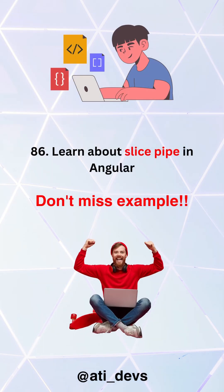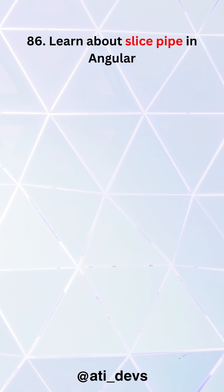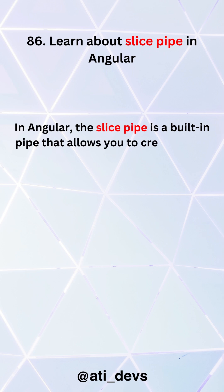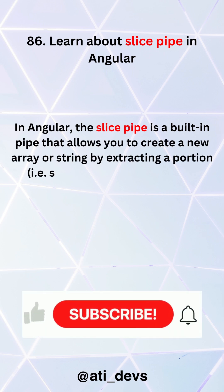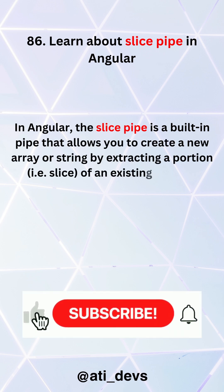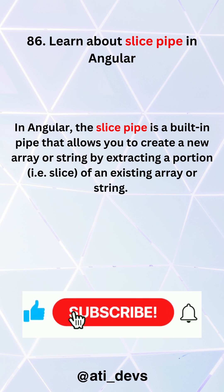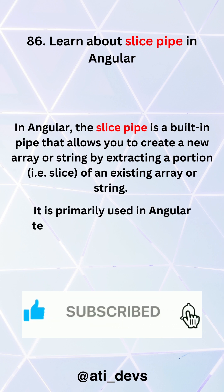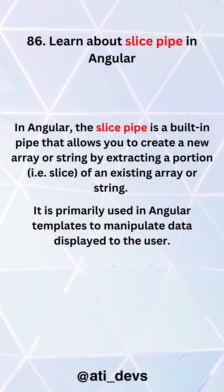Learn about SlicePipe in Angular. Don't miss the example at the end. In Angular, the SlicePipe is a built-in pipe that allows you to create a new array or string by extracting a portion — that is, a slice — of an existing array or string. It is primarily used in Angular templates to manipulate data displayed to the user.